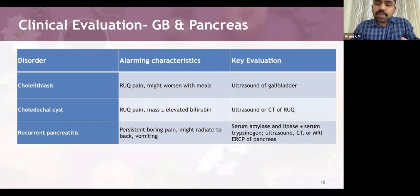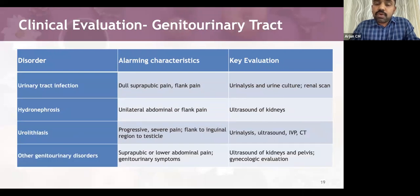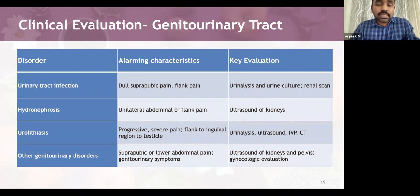Gallbladder and pancreatic conditions include cholelithiasis, choledochal cysts, and recurrent pancreatitis. These present with right upper quadrant pain worsening with meals; choledochal cysts may have associated jaundice; pancreatitis involves pain radiating to the back with vomiting. These require ultrasound, CT scan, and serum amylase. Genitourinary causes include UTI (dull suprapubic pain, flank pain, high fever, vomiting), hydronephrosis (unilateral flank pain), and urolithiasis (progressive severe pain radiating from flank to inguinal region and testicles), requiring urinalysis, renal ultrasound, CT scan, and gynecological evaluation.